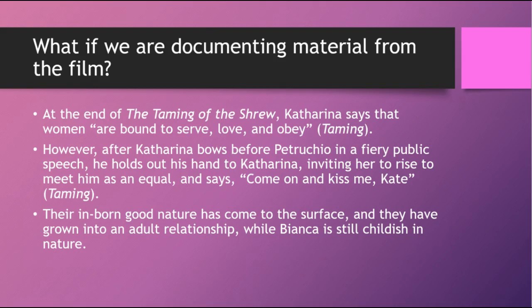What if we are documenting material from the film in this paper? At the end of The Taming of the Shrew, Katharina delivers a speech — and this title is our first element on the works cited page. There are two ways to document a film in MLA style according to the Purdue OWL: you can start with the title of the film, or with who you consider the most important person who worked on it, like Zeffirelli the director, or even the actors' names first. I decided to go with the title of the film first in my works cited list, so that's what goes into the citations. There are no page numbers in a film, so those are left out.